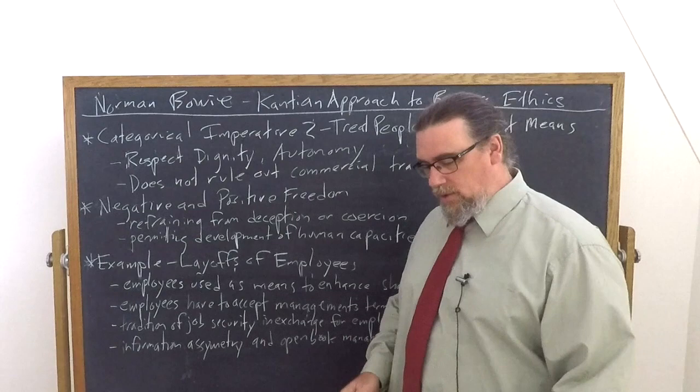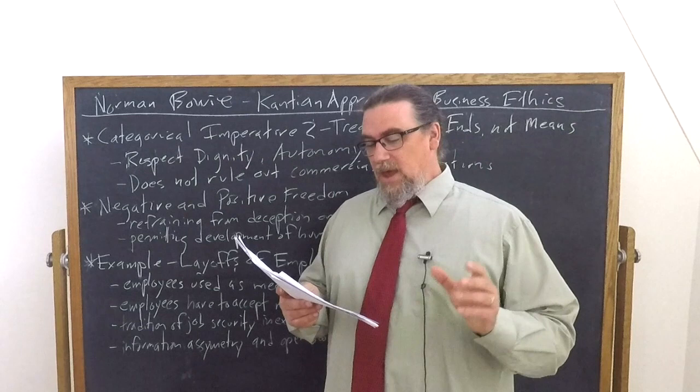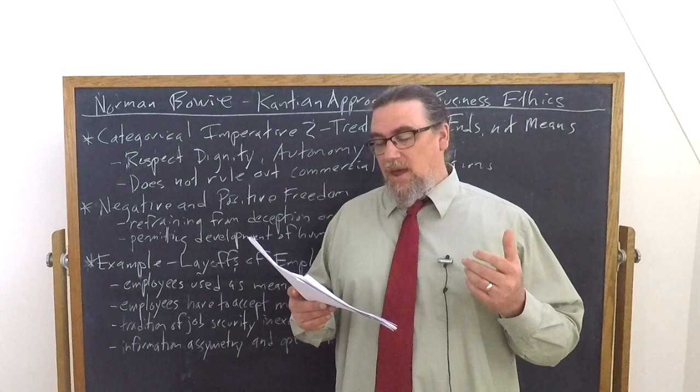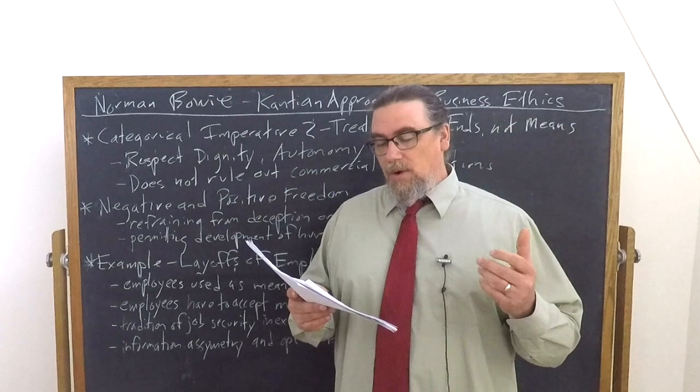He quotes Christine Korsgaard, great Kantian scholar here, who says, according to the formula of humanity, coercion and deception are the most fundamental forms of wrongdoing to others, the roots of all evil. They violate the conditions of possible assent and all actions which depend on their coercive or deceptive character are ones that others cannot assent to.